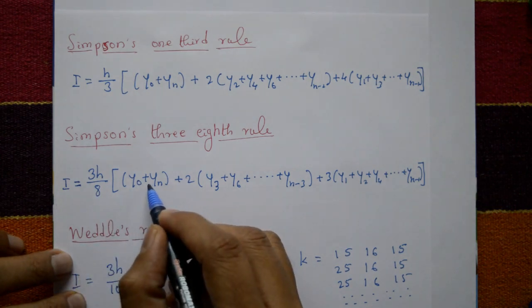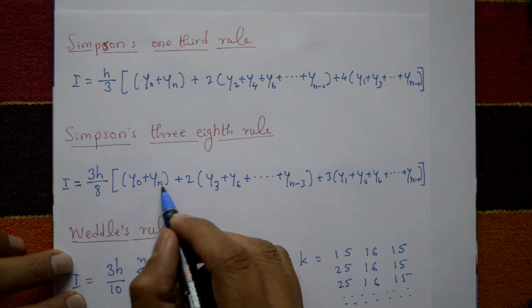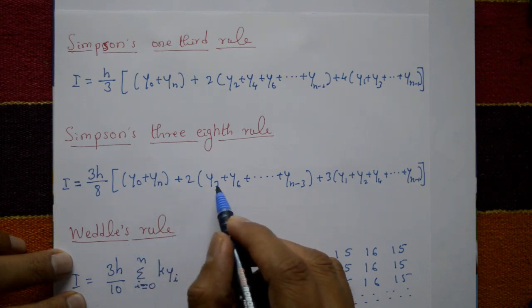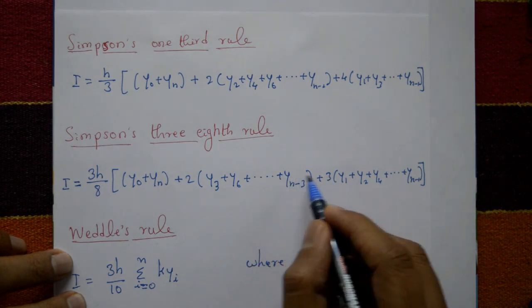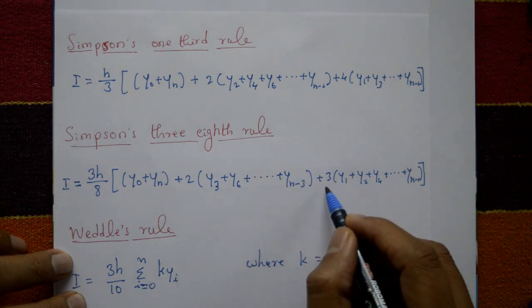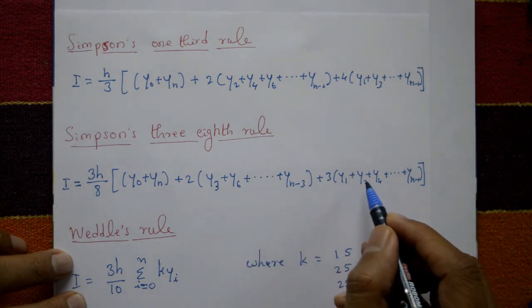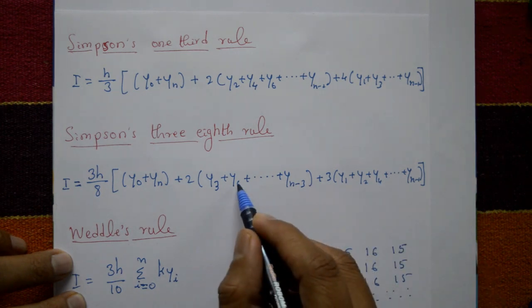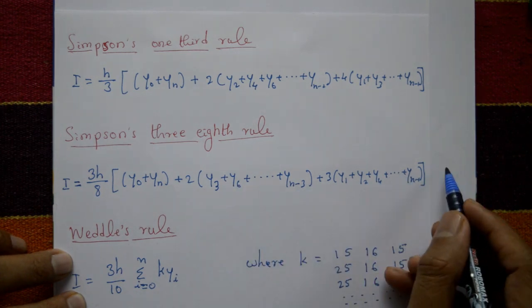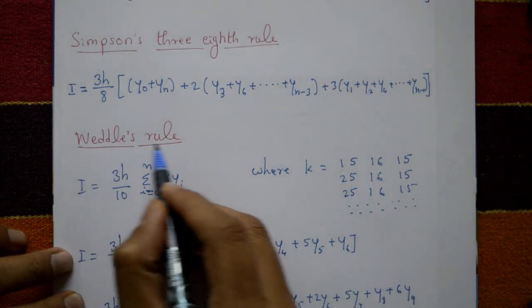In Simpson's 3/8 rule: I = 3h/8 into (y0 plus y-n) plus 2 into multiples of 3 (y3, y6, y9, y12, y15, y18, ..., y(n-3)) plus 3 into the remaining variables y1, y2, y4, y5, y7, y8, and so on up to y(n-1).